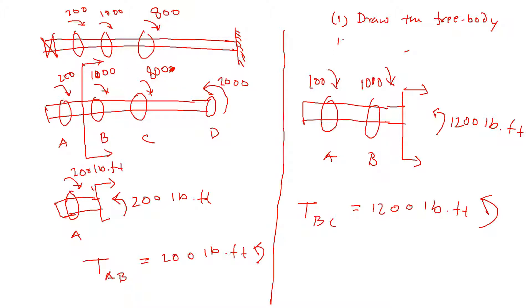And then once you get the free body and then cut where you want to see the torque, cut in the appropriate place, where you want to see the torque between A and B, cut between A and B. And then the third thing would be just balance after cut.